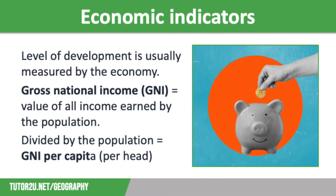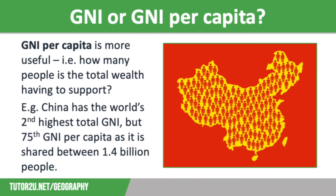This value is then divided by the total population to give an average figure for each person. This is called GNI per capita — capita stands for per head. It is always measured in US dollars in order to compare countries, as you wouldn't be able to compare levels of wealth using hundreds of different currencies. So we use GNI per capita to compare countries rather than total GNI.